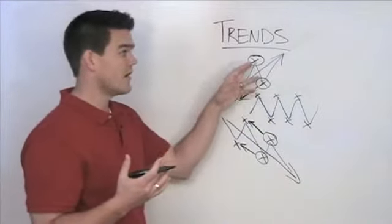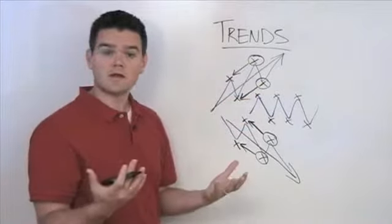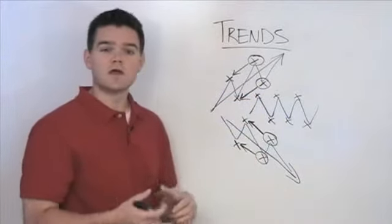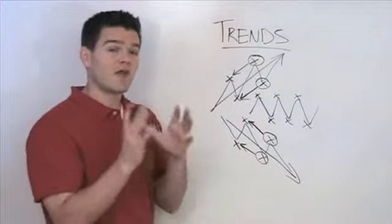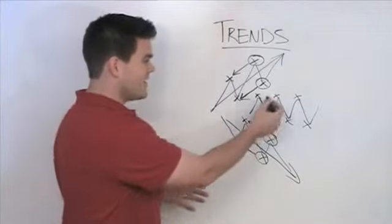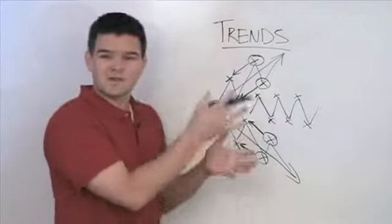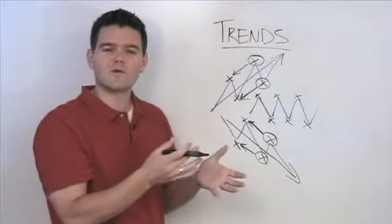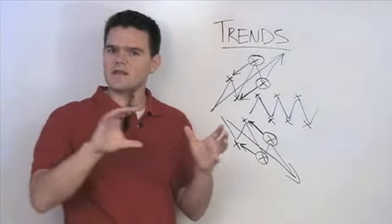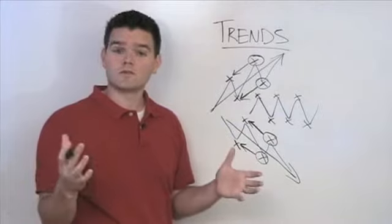If you have higher highs and higher lows, you're in an uptrend. If you have lower highs and lower lows, you're in a downtrend. And if you're having a hard time determining whether the highs or lows are really higher or lower or where they're going, you're probably consolidating sideways and not really trending one direction or the other.